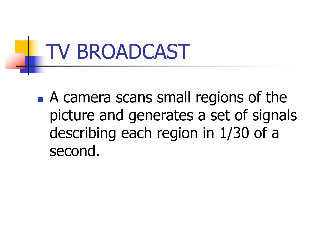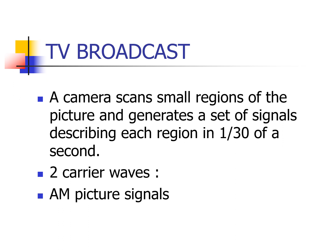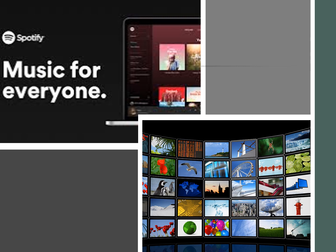During a TV broadcast, a camera scans small regions of the picture and generates a set of signals describing each region in 1/30th of a second. A TV broadcast uses two carrier waves: AM for picture signals and FM for sound signals. Hopefully, you learned from this video the principles and processes involved when you watch your favorite TV program and listen to your favorite song.